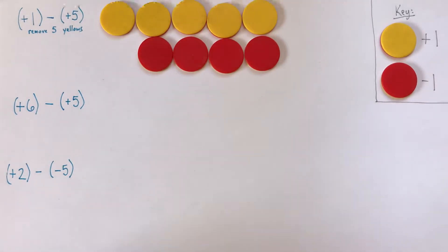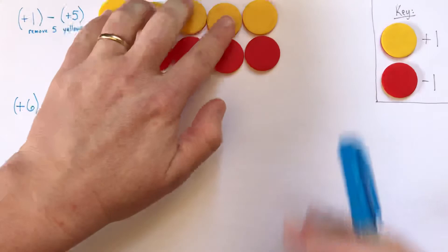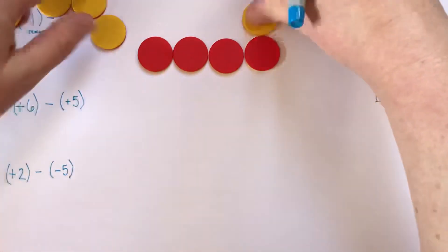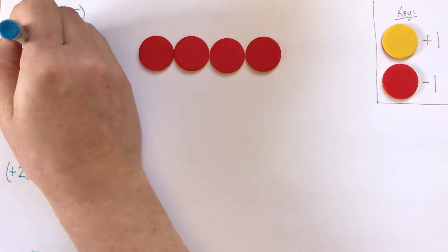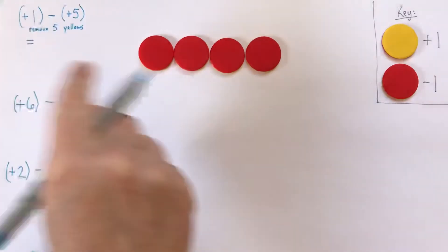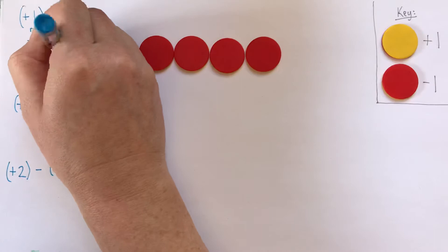So I've gotten positive 1, and now I'm going to do the subtraction. I'm going to remove 5 yellows. 1, 2, 3, 4, 5. Take those away. And what remains after I remove them is my answer. So the answer is 4 reds, or negative 4.